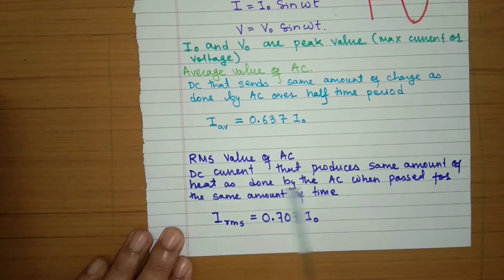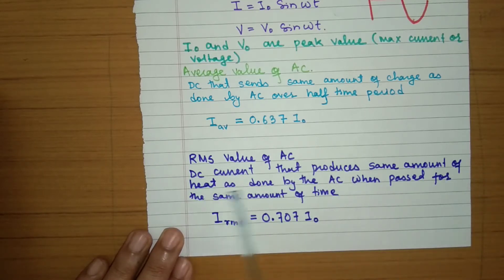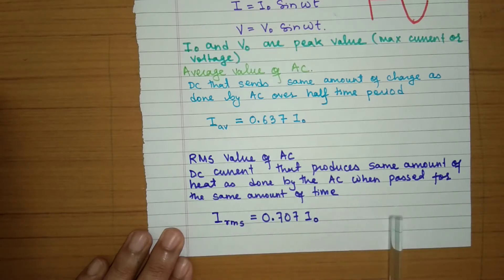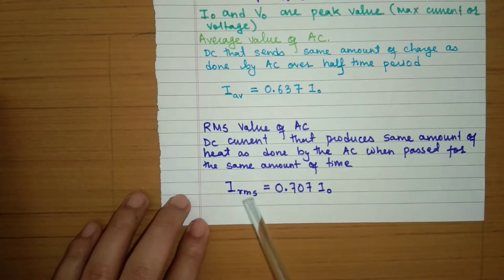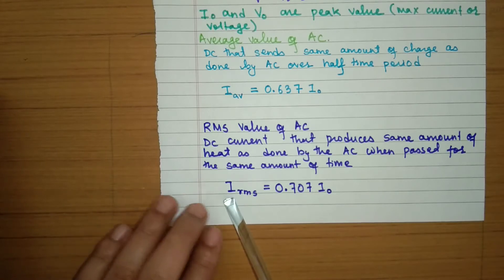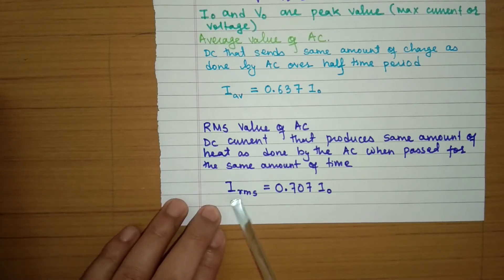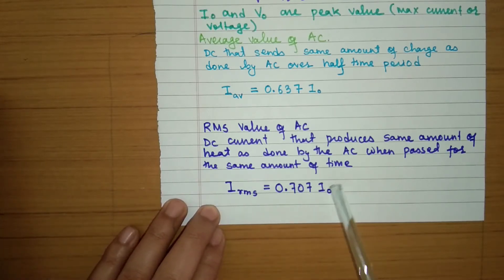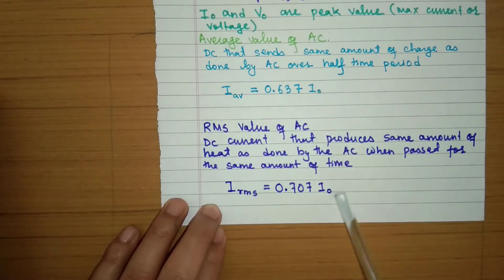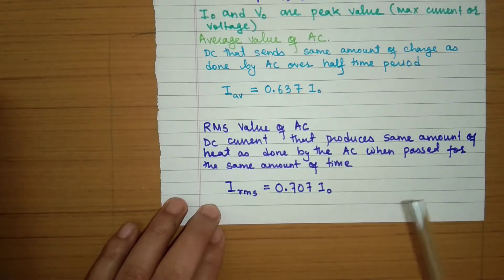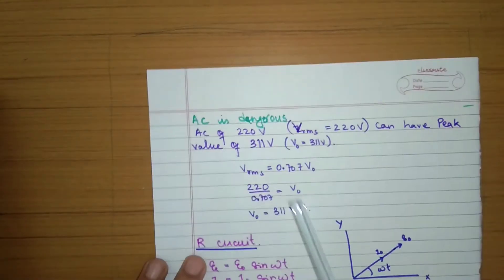The RMS value of AC is that DC which produces the same amount of heat as the AC when passed for the same amount of time. The value is given by I_RMS = 0.707 × I₀, where I₀ is the maximum value.